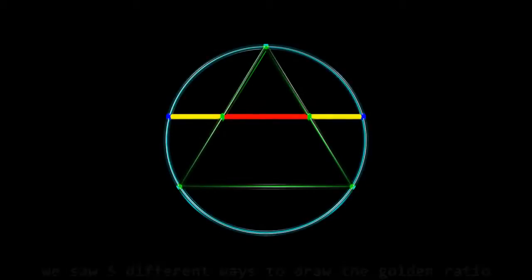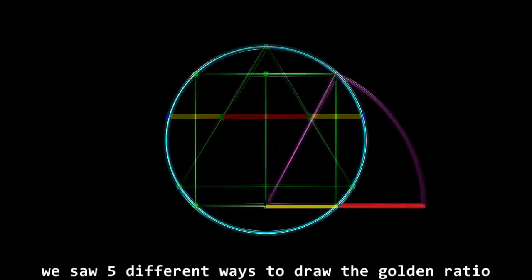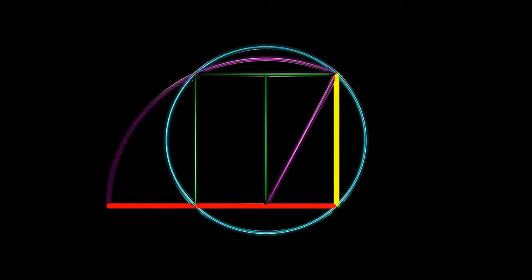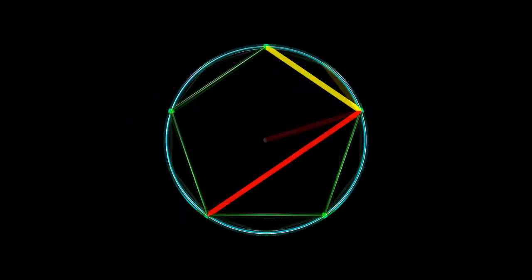In the previous chapter we saw five different ways to draw the golden ratio. Let us now see other ways to draw the golden ratio using half-status method from the early 21st century.